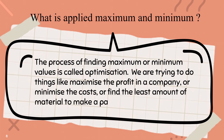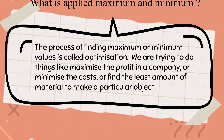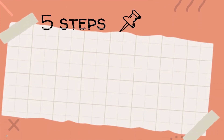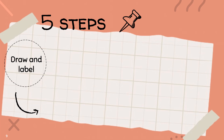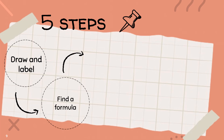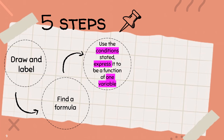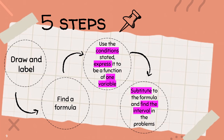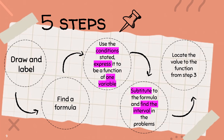Or find the least amount of material to make a particular object. There are five steps you need to follow: number one, draw a label; number two, find a formula; number three, use the connection to express it as a function of one variable; then substitute it into the formula and find the interval; lastly, locate the value of the function from step three.